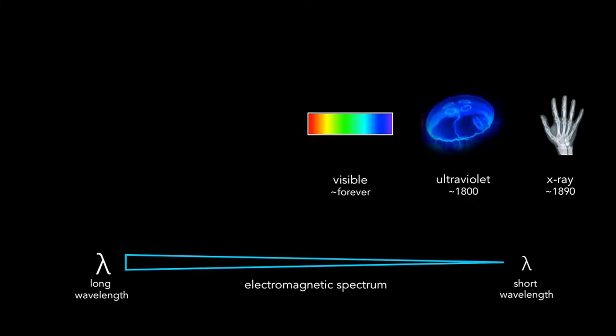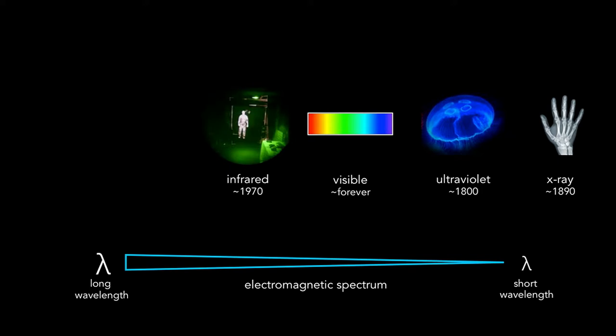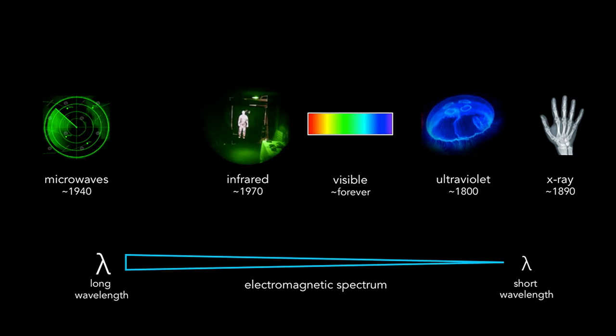For example, the discovery of X-ray offered a whole new way to look at the human body. Ultraviolet sources made fluorescence a fundamental tool for chemical analysis and forensics — anyone familiar with the CSI TV show? Infrared cameras enable us to see at night by capturing the heat signatures of objects. And microwaves are used in radar to see airborne objects far away and in the presence of clouds.